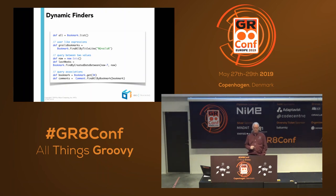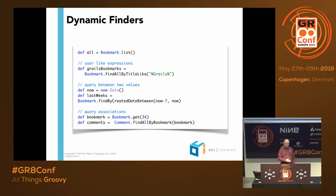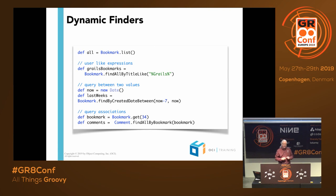Here are a couple of simple examples of dynamic finders, like bookmark.findAllByTitleLike. That sends a query to the database to retrieve all the bookmarks that have the word 'grails' in their title. That code will work whether we're using Hibernate, some other JPA implementation, MongoDB, or Neo4j. It's not Oracle code, and it's not MongoDB code — it's GORM code. GORM intercepts that method call and does whatever it takes to carry out that query in whatever implementation you're using. So the exact same code results in different things happening under the hood depending on your implementation.